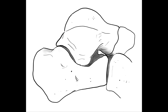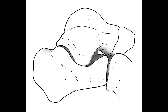The tarsal sinus is a cylindrical cavity between the talus and the calcaneus. It is located on the lateral aspect of the foot, distal and anterior to the lateral malleolus. It separates the anterior from the posterior subtalar joints. It contains blood vessels, nerves, fat, and a ligamentous complex that includes part of the inferior extensor retinaculum, the lateral cervical ligament, and the medial talocalcaneal interosseous ligament.